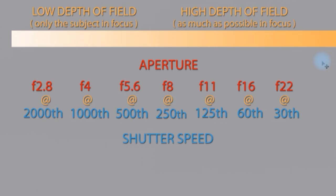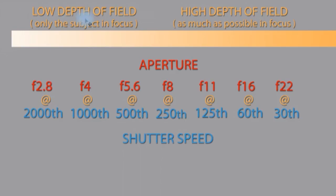There is a byproduct of aperture. It's a bit like when you squint your eyes — when you squint you tend to see more in focus. It's the same with aperture: the wider the aperture, around f2.8, you get a low depth of field. Depth of field is the amount of what you see that is in focus. As we go up to f22, because we're looking through a very small hole, more of the scene is in focus. That's the byproduct of f-stops, but we'll deal with that in another lesson.